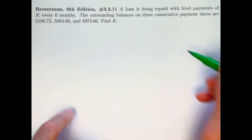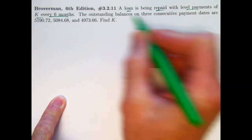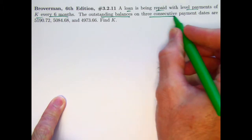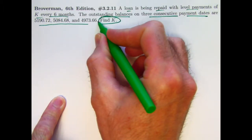Pretty short-looking problem. A loan is being repaid with level payments of K every six months. The outstanding balances on three consecutive payment dates are these numbers. The goal is to find K.